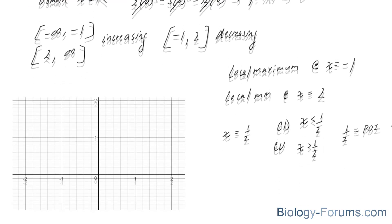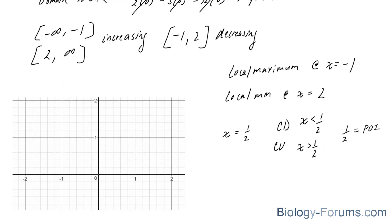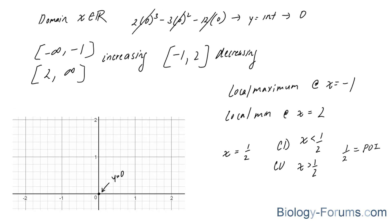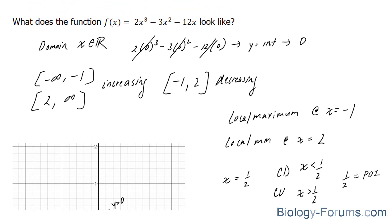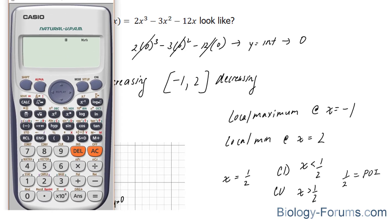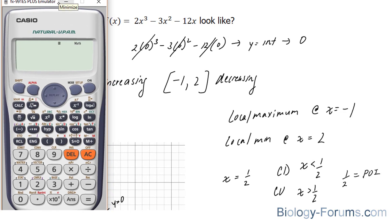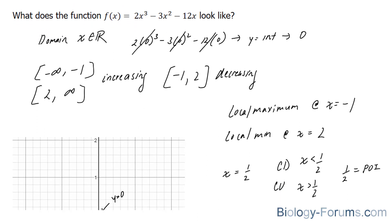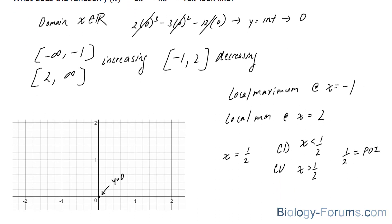Let's start off by stating some of these important points. We know the y-intercept is 0. We know there's going to be a local maximum at x equal to negative 1, so we can find the corresponding y-value. Evaluating the function at x equals negative 1 gives positive 7, so our local maximum will occur at the point negative 1, positive 7.